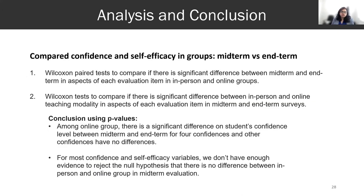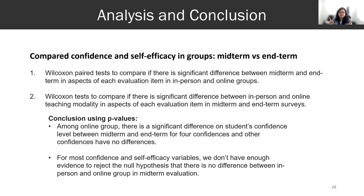When I wanted to test these statistically — not just visually — I compared confidence and self-efficacy at midterm versus end of term, and also online versus in-person, using the Wilcoxon paired test where we can compare two groups and see whether there's a significant difference. I found a significant difference among the online group in students' confidence level between midterm and end of term in four confidence levels. But for other confidence levels and most self-efficacy variables, we do not see a significant difference — we do not have enough evidence to reject the null hypothesis that there is no difference.